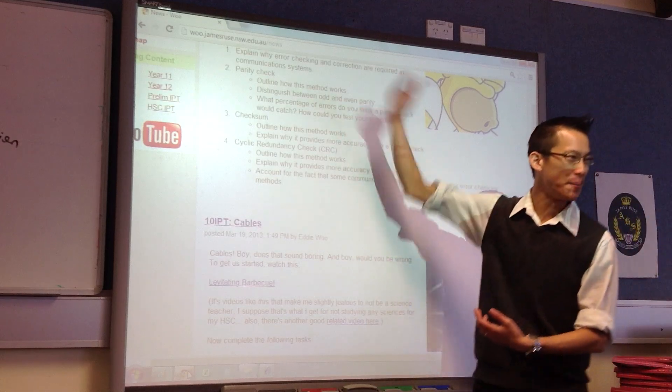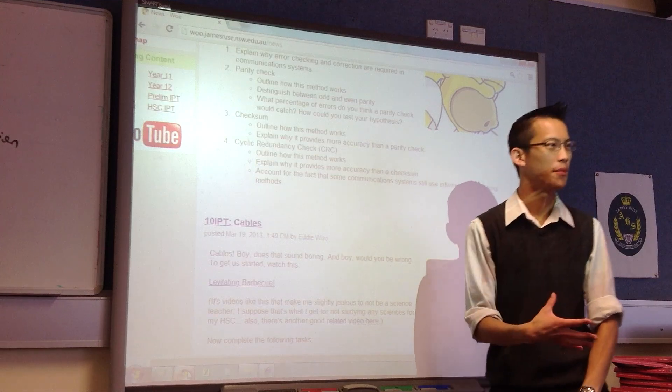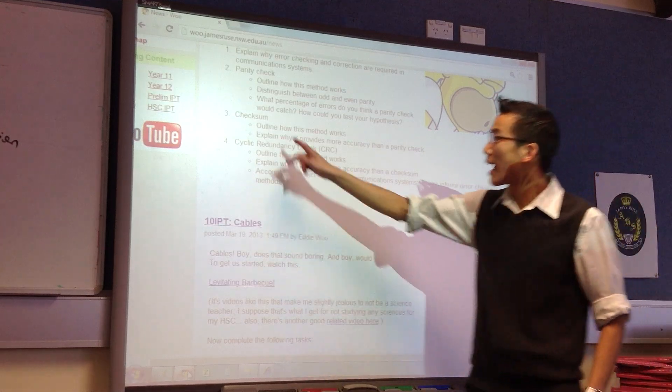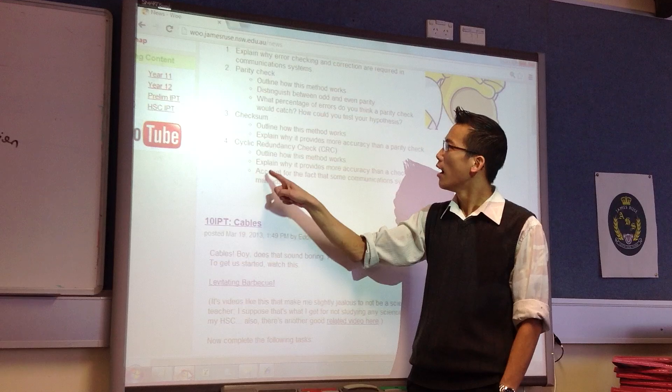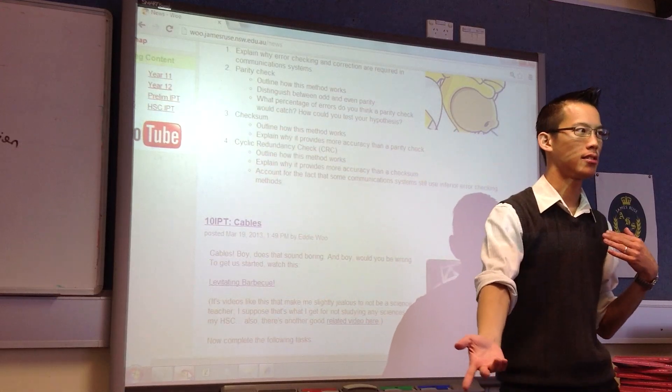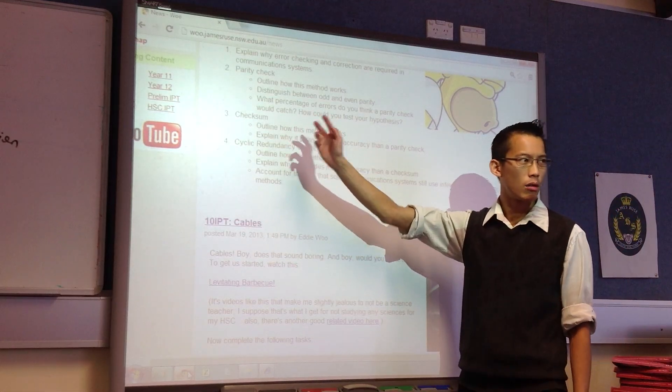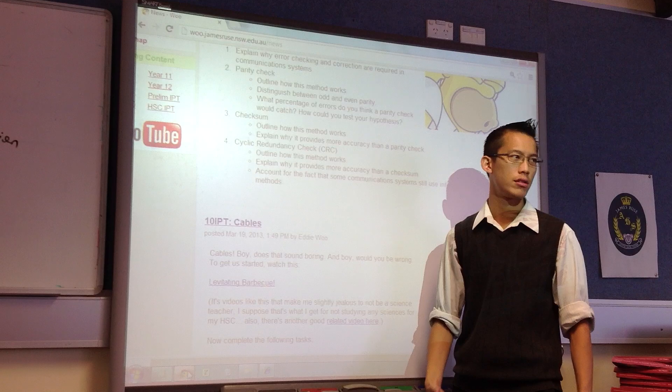The second method, and we're going up in terms of sophistication here, is called a checksum. As the name implies, it has to do with addition. This parity check is really just about counting, odd or even, checking ones and zeros. But the checksum requires a little more calculating power, a little more processing power.